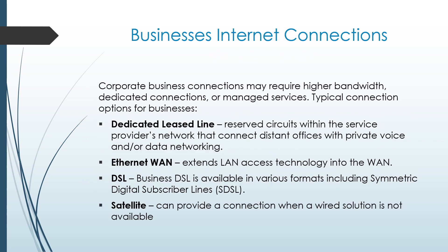Business internet connections: Corporate businesses may require higher bandwidth, dedicated connections, or managed services. Typical connection options include: Dedicated leased lines — reserved circuits within the service provider's network that connect distant offices with private voice and/or data networking. Ethernet WAN — extends LAN access technology into the WAN. Business DSL — available in various formats including Symmetric Digital Subscriber Line (SDSL). Satellite — can provide a connection when a wired solution is not available.